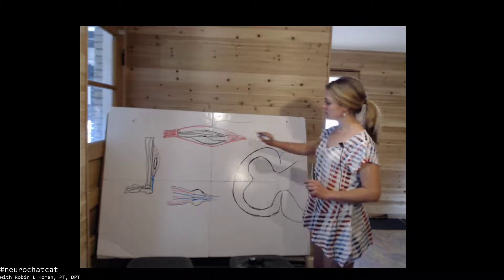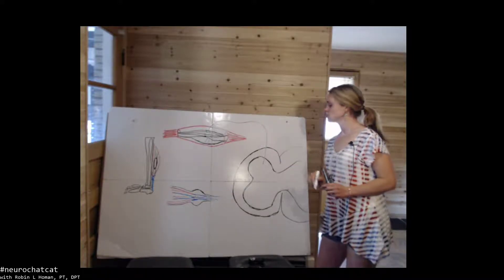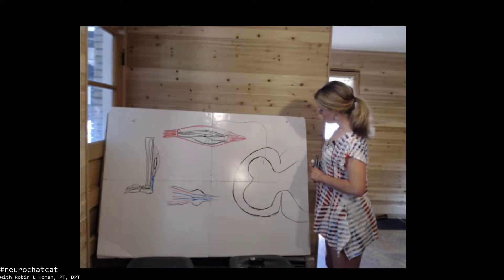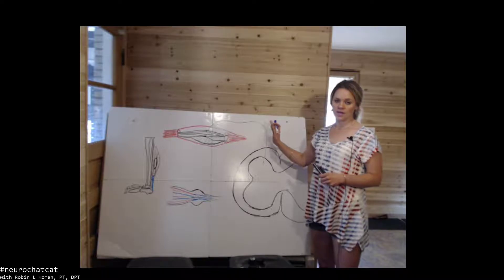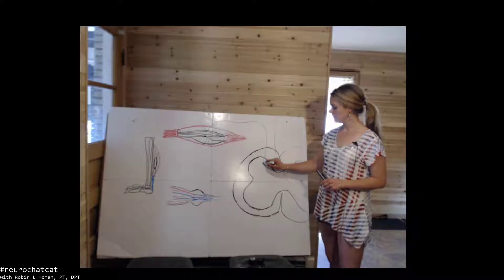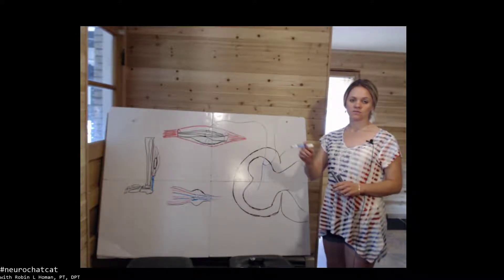That information is sent to dorsal horn of the spinal column and the muscle spindles can elicit two different responses. You can either send information cortically or create the monosynaptic reflex, single synapse.